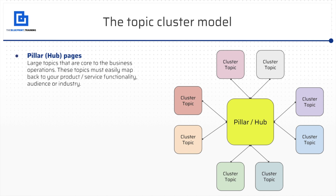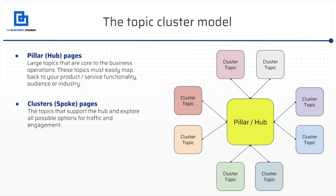Let's dive a little bit deeper into the topic cluster model or the pillar model. It starts with these pillar pages — large topics that are core to business operations. I always like to start by mapping these topics back to your core product or service functionality, your audience, or your industry. This helps us stay focused on the things that are going to drive traffic that will ultimately impact the business's top line, and also keeps your website talking about things you should be talking about. The clusters — all the cluster topics stemming off, formerly called spoke pages, from the pillar or hub page — are the topics that support and explore all possible options for traffic and engagement based on that big topic. These pillar topics can be large items that generally require supporting information you don't necessarily need on the pillar page itself, but can be broken off into their own direct URL. That own URL can rank for a longer tail search, but also serves as a means to support the pillar page and give the necessary depth to that larger and more competitive topic.